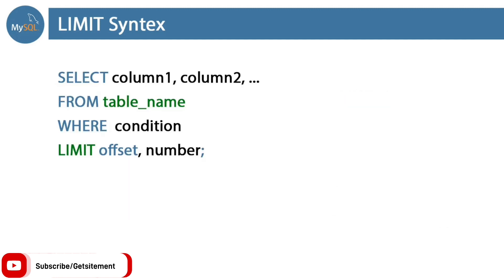Everything will remain the same — we just need to use the offset number before the limit number. After the LIMIT keyword, we need to provide the offset number, then using a comma we provide our limit number. That's it. Let's start the practical and see how it works.